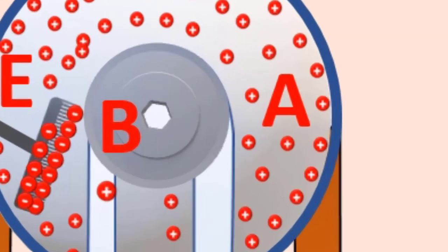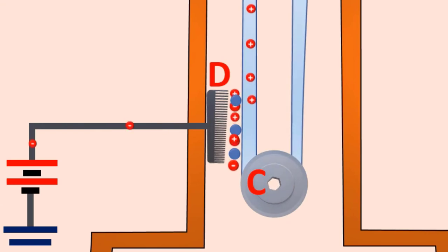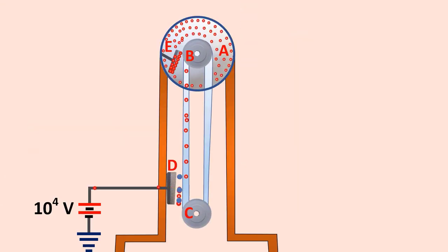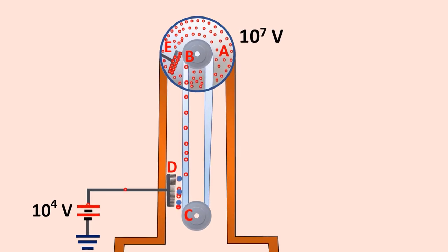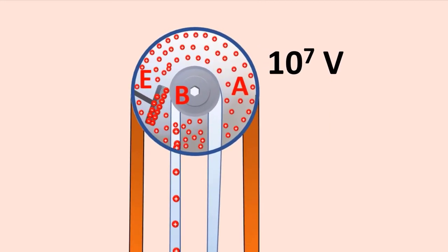When the belt descends, it has almost no net charge. At the bottom, it again gains large positive charge. The belt goes up and delivers the positive charge to the outer surface of the sphere. This process continues until the outer surface produces a potential difference of the order 10^7 volts, which is the limiting value.